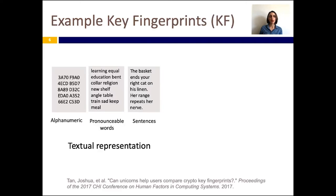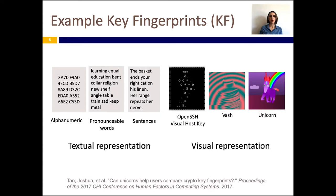Several types of key fingerprint representation techniques exist. Here you can see examples of text-based representations, including alphanumeric, pronounceable words, and sentences. In addition, there are several visual key fingerprint representation solutions. For example, the visual host key used by OpenSSH, VASH, and Unicorn, that convert the input stream into an image.